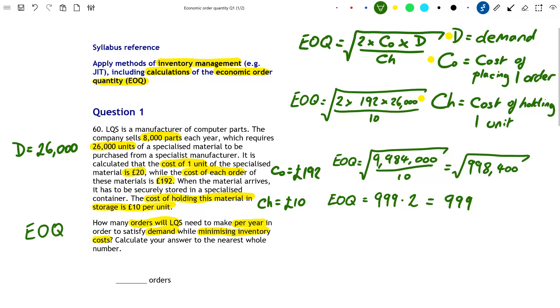Now the final step, because we haven't finished yet, is to work out how many orders LQS will need to make per year. So if LQS needs to order 26,000 units over the course of the entire year to satisfy demand, and they purchase 999 units per order, then if we divide 26,000 by 999, we get 26.03.